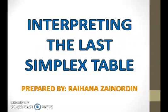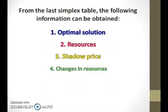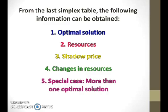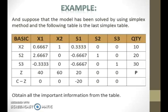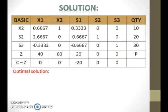Interpreting the last simplex table. From the last simplex table, the following information can be obtained. Suppose that the following model is a linear programming model for the production of two dresses at a factory, namely dress 1 and dress 2. And suppose that the model has been solved by using the simplex method and the following table is the last simplex table. To obtain the optimal solution, first list out all the variables in the model.